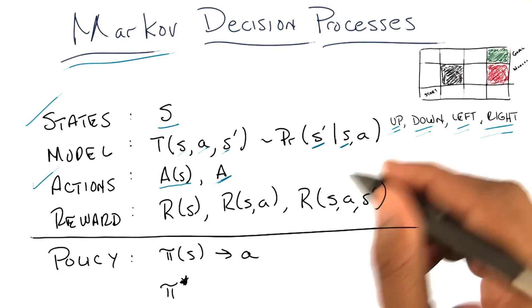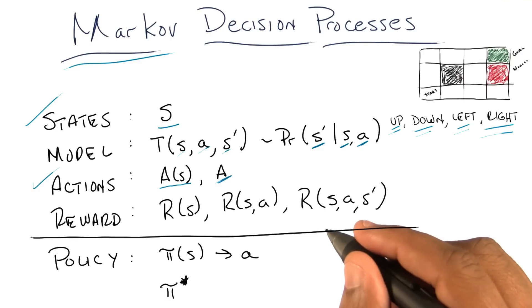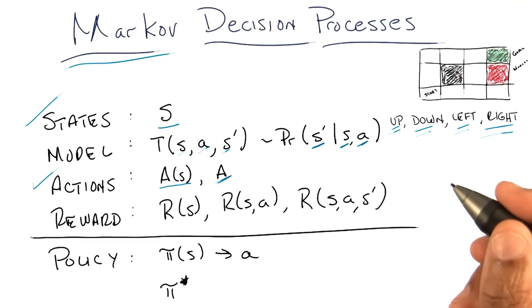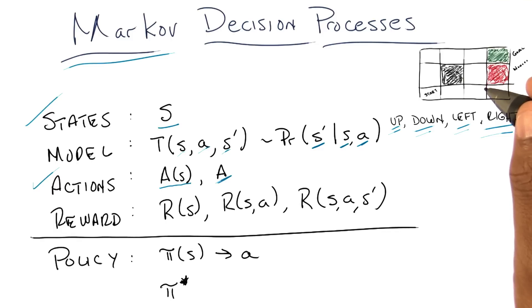Got it? I think so. So the s prime is where you end up, and the s a is what you're given. So you plug these three in, oh I see, and you get a probability out. But the probabilities have to add up to one if you sum it up over all the s primes. Right. That's exactly right.